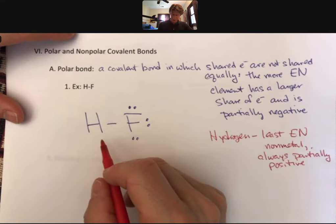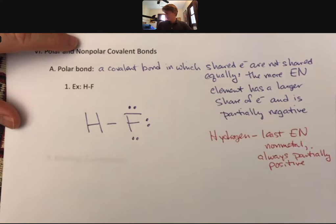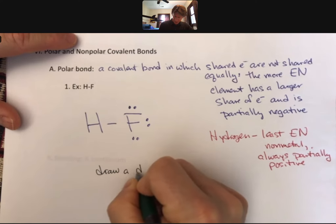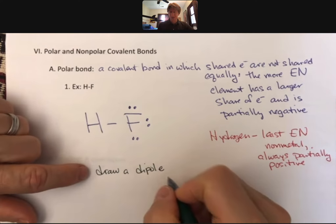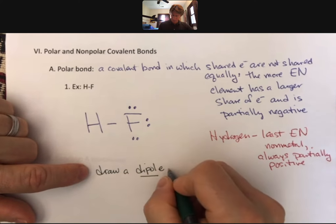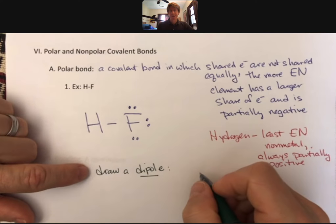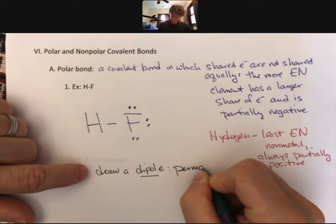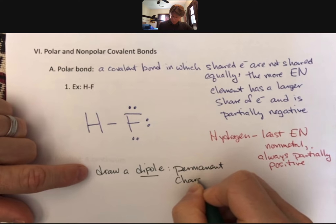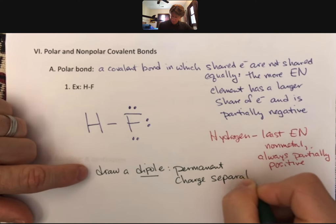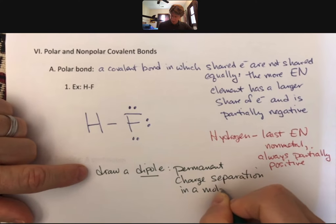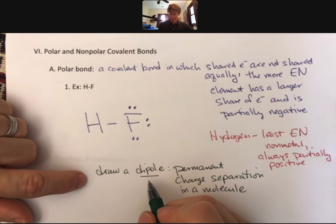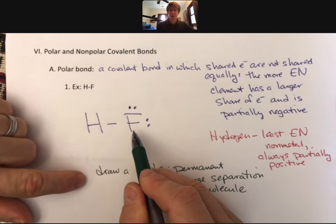Here's what I want to do. What I am about to do in dark green or black is draw a dipole. I'll tell you what the dipole is first. A dipole is a permanent charge separation in a molecule. When I draw a dipole, fluorine is going to be partially negative.